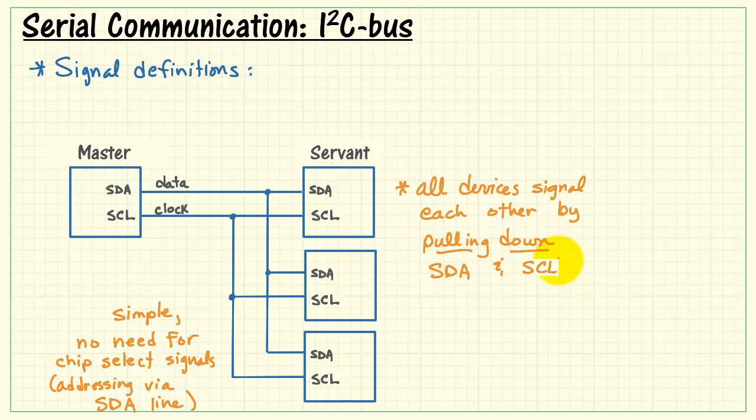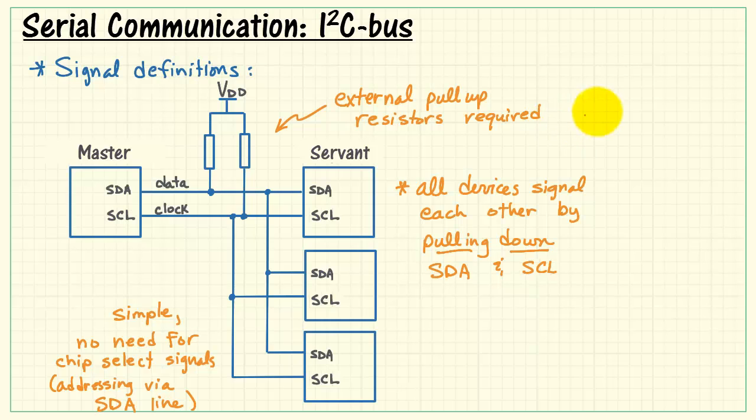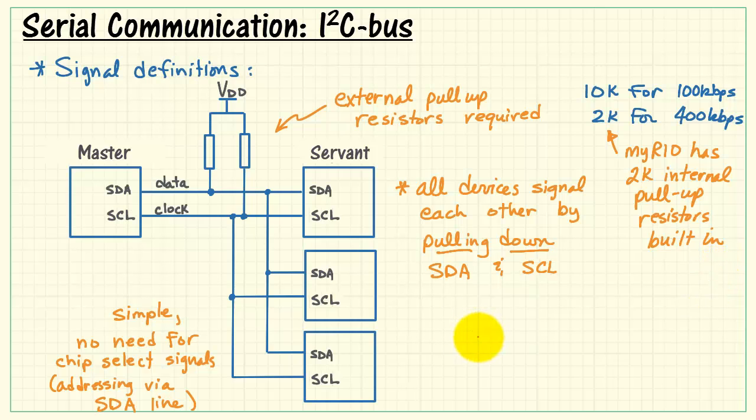Now all devices signal each other by pulling down SDA and SCL. That means we always need two external pull-up resistors on SDA and SCL. Typically we use 10k for 100 kilobits per second and 2k resistors for 400 kilobits per second.